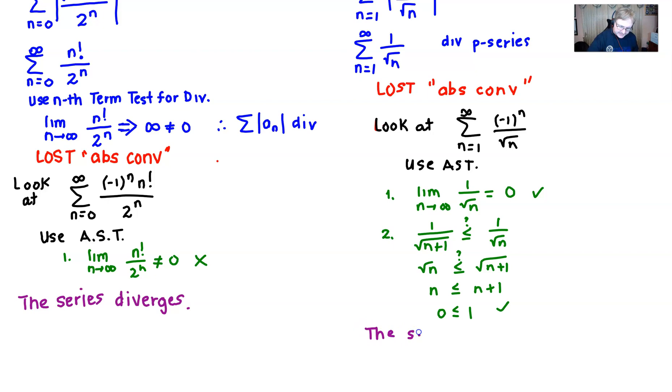But remember we were divergent when we looked at its absolute value. So that basically means that this piece here is true and that forces our series to be conditionally convergent. And when I say the series, I'm talking about the original problem that was presented to us. So the series conditionally converges.